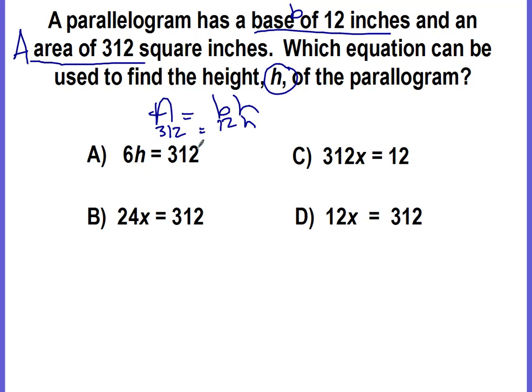We're going to come here - this is 6 × h = 312. This is our area, the 312, but there is no 6 in our problem, so it cannot be A. B is 24x = 312. I bet this x is supposed to be h, but either way, is there a 24? Is our base 24? No, our base is 12.